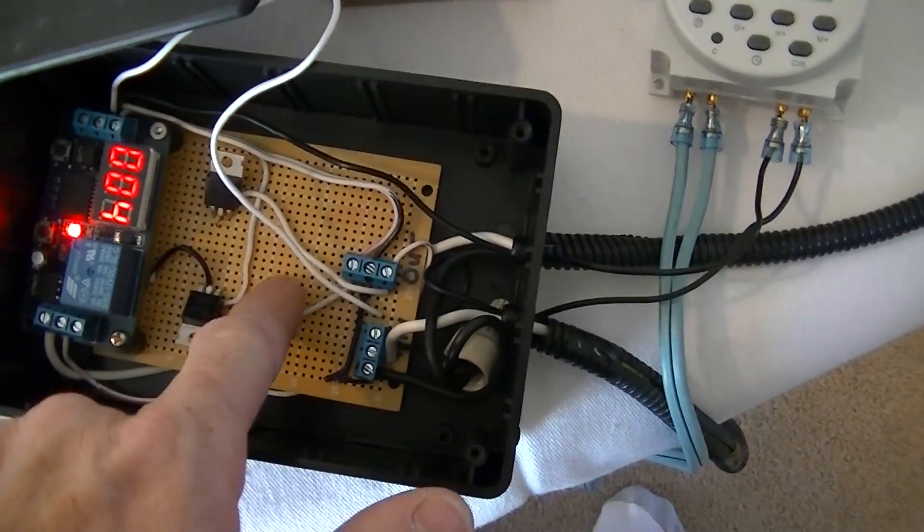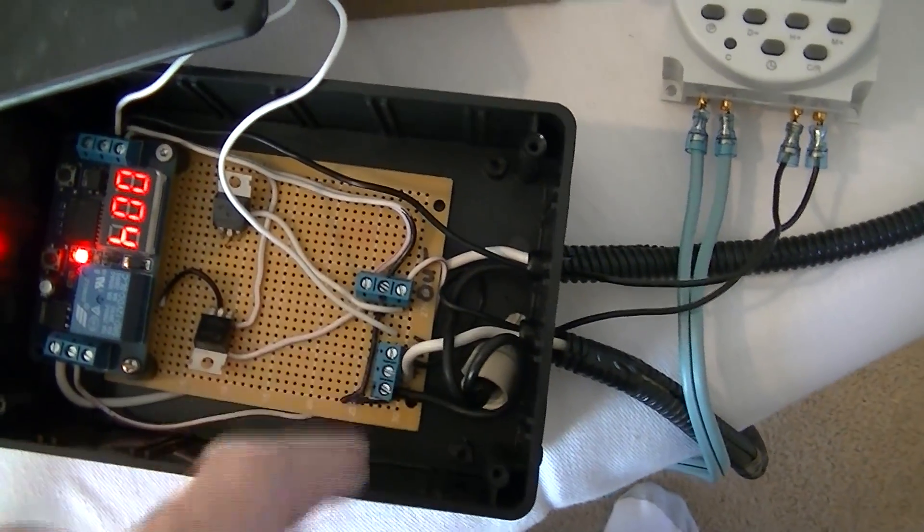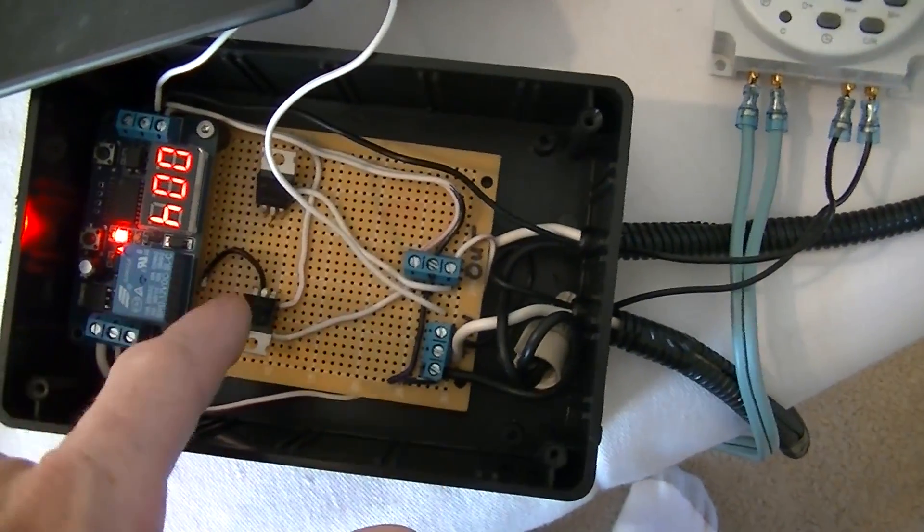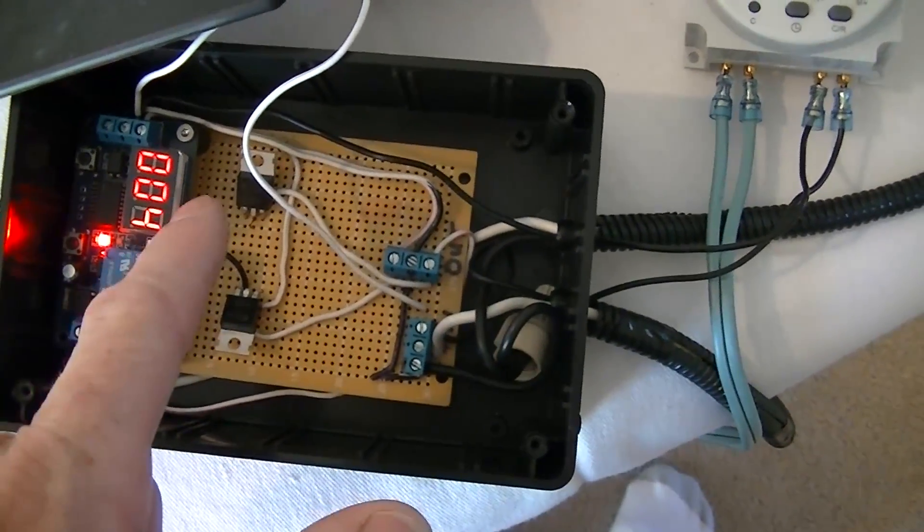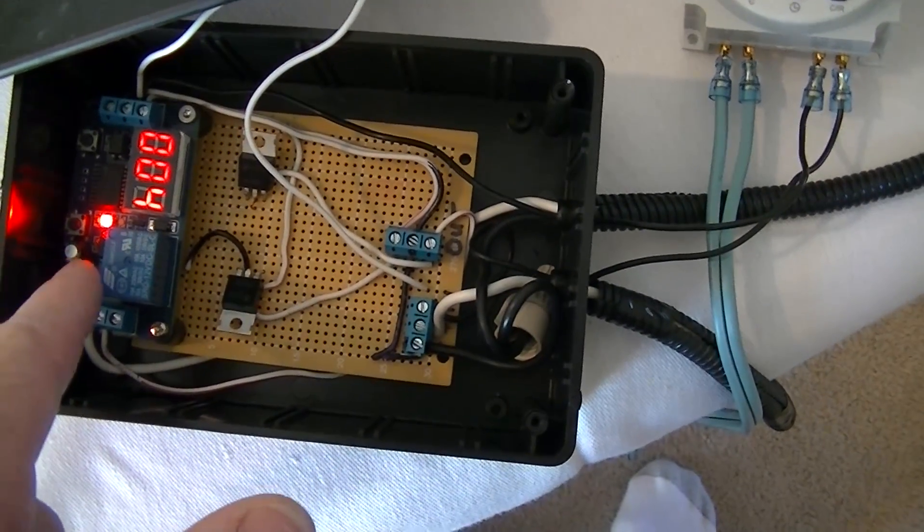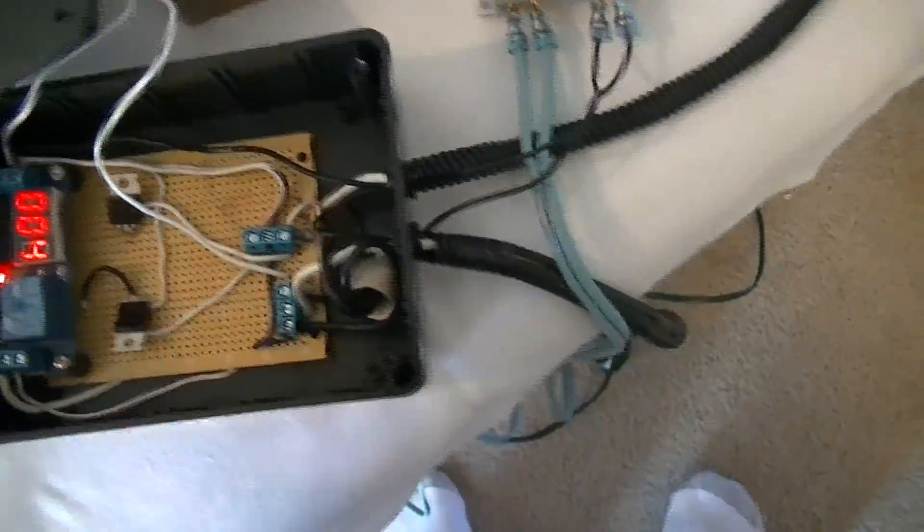This board down here is something I threw together. Some voltage regulators to give me my 12 volts and my 5 volts. 5 volts for the motor, 12 volts to run the board. That way I can use a power supply, just an old power supply.